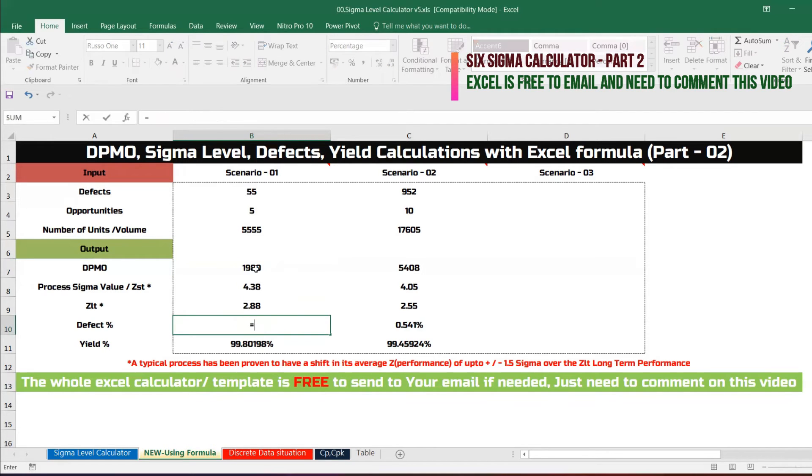This is the DPMO value divided by 1 to the power of 6. And then what is the yield? Yield is 1 minus that value, 99.80198%.